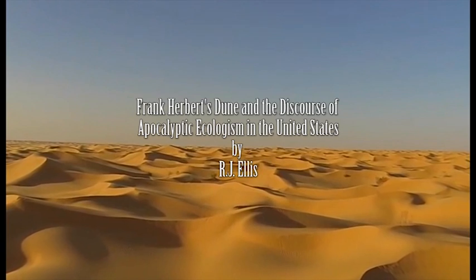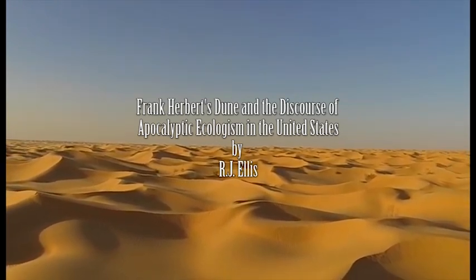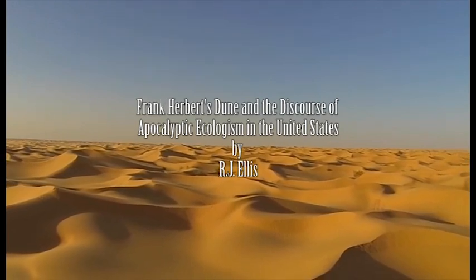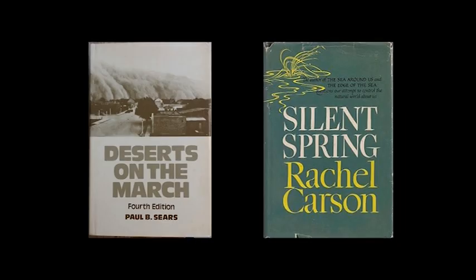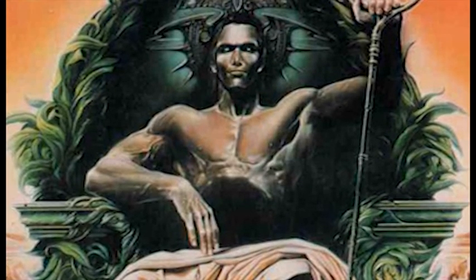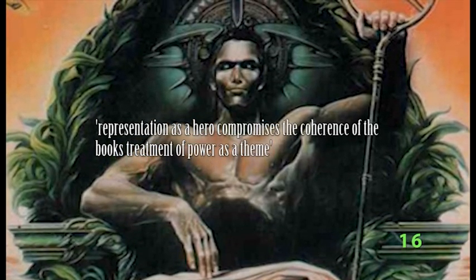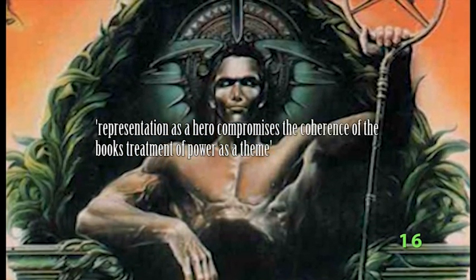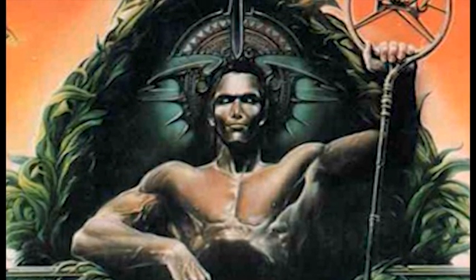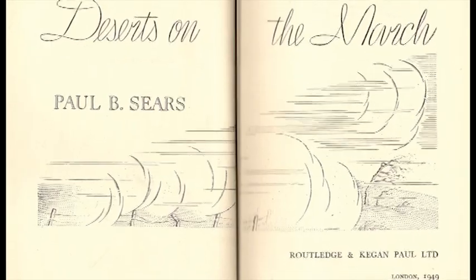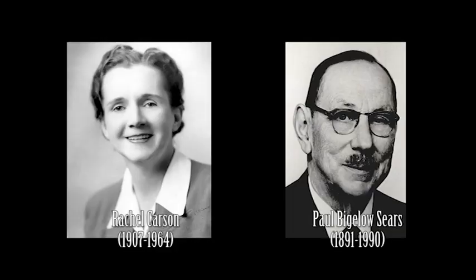In R. J. Ellis's Frank Herbert's Dune and the Discourse of Apocalyptic Ecologism in the United States, Dune is approached from a much more in-depth ecological viewpoint, taking the time to dwell upon the individual works of ecological importance contemporary with or predating Herbert's work on Dune. Ellis shares the viewpoint with Stratton that Paul's representation as a hero compromises the coherence of the book's treatment of power as a theme, and therefore also its treatment of ecology as a tool of statecraft. He also shows an awareness of the ecological influences on Frank Herbert, especially those of Rachel Carson and Paul Bigelow Sears, and notes the pseudo-biblical language which Carson uses as being tantamount to dystopic science fiction.